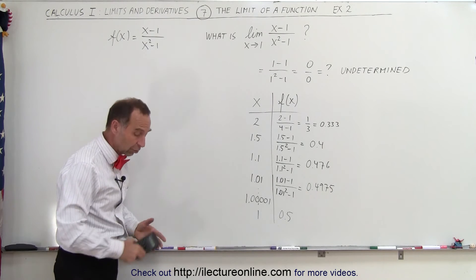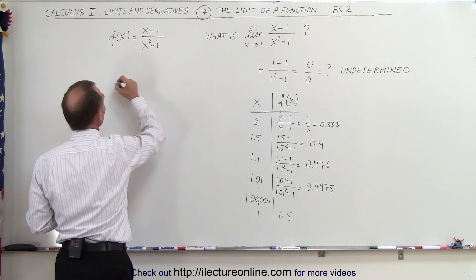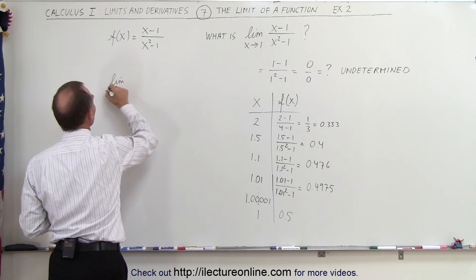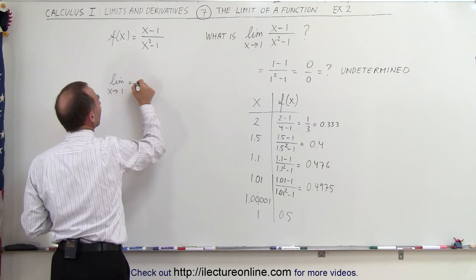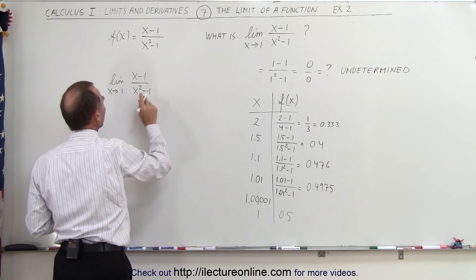Now, another way of finding the solution to that is to do the following. We can say that, well, we take the limit. The limit as x approaches 1 is of x minus 1 divided by x squared minus 1.